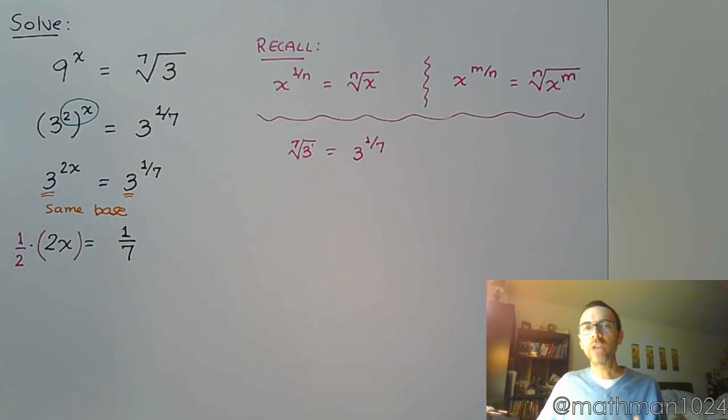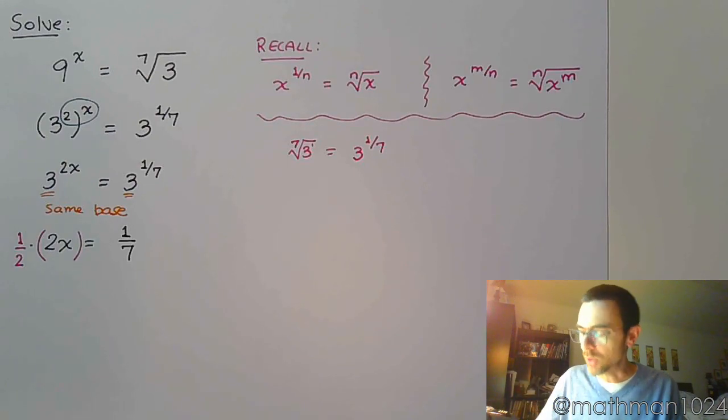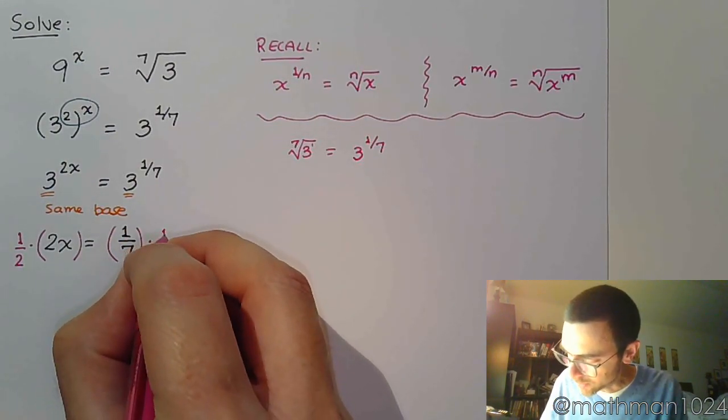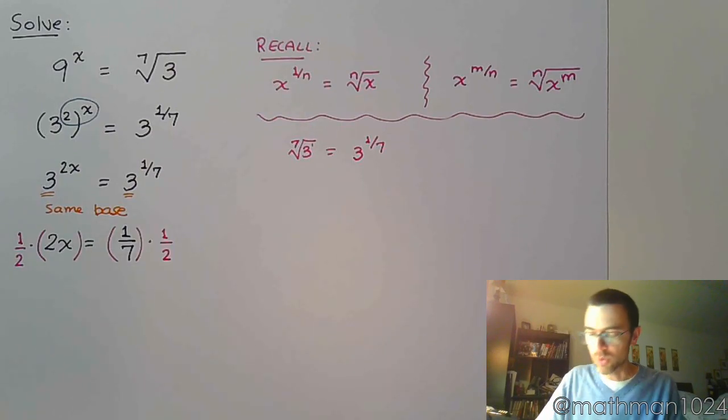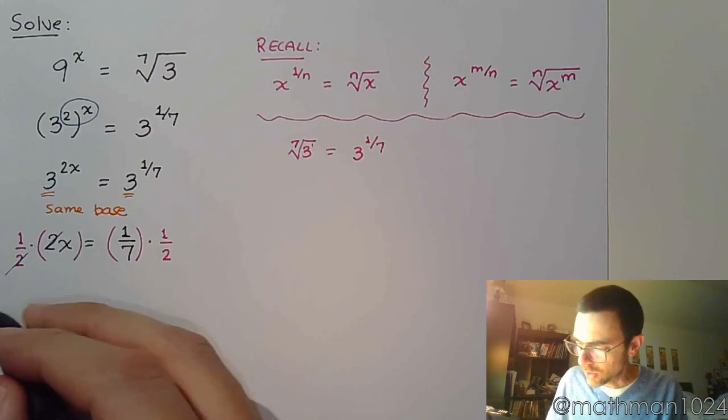So I can multiply both sides of the equation times the reciprocal of the coefficient, which is 1 half. And keep in mind that multiplying times 1 half is the same thing as dividing by 2. So it's really the exact same step. But I'm showing this as multiplication times 1 half because on the right side of the equation, when I multiply times 1 half, it's pretty simple how this simplifies.